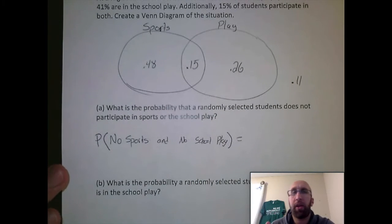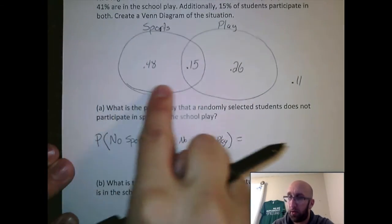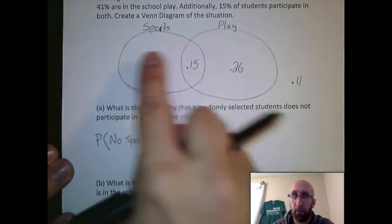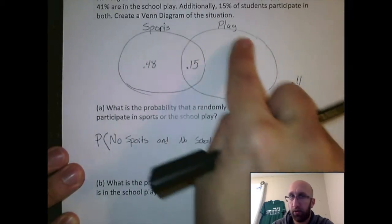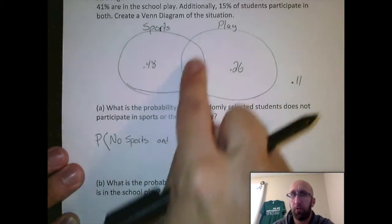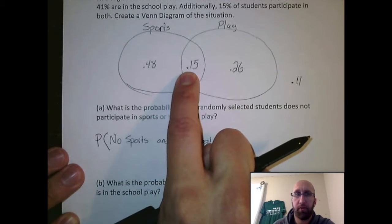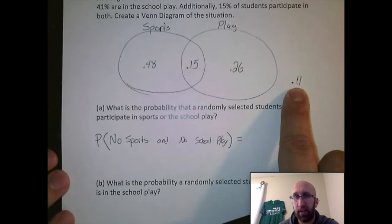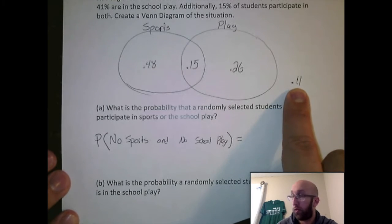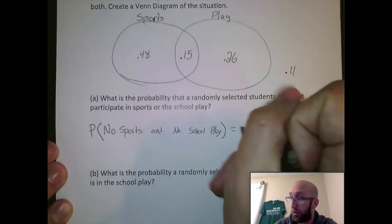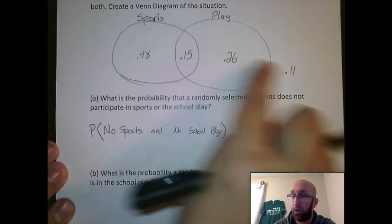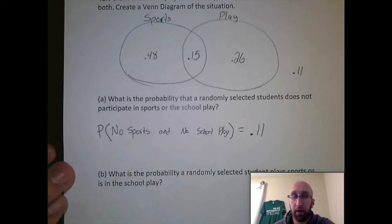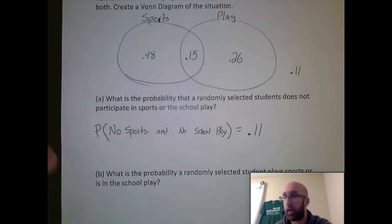When I look at my Venn diagram, this entire circle represents all the students in school that play sports. This entire circle represents all the students that do the school play. This part in the middle is those that do both, and outside of both those circles would be the students that do neither. They're not in the sports circle and they're not in the school play circle. So there's really nothing we need to do for this problem. We just fill in our .11, which we got from setting up our Venn diagram earlier.